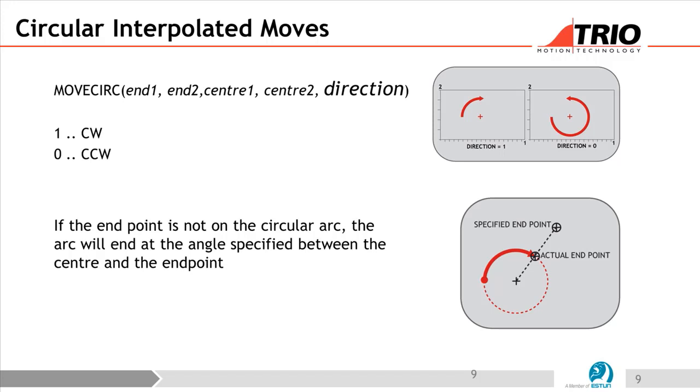If the endpoint is not on the circular arc, the arc will end at the angle specified between the center and the endpoint. So you have to know what is the endpoint of the circular.